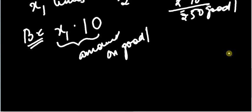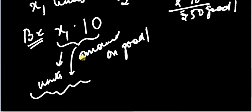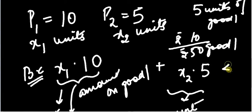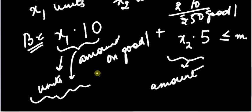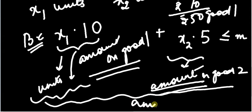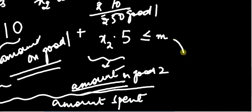Similarly, if I am consuming x2 units of good 2 and the price is 5, then the total amount that I spend on good 2 is 5x2. Now this should be less than or equal to the income of the consumer. The amount that I spend on good 1 plus the amount that I spend on good 2 — which is the total amount that you spend — should be less than or equal to the income of the consumer.